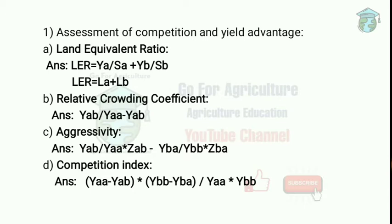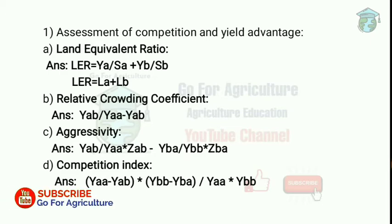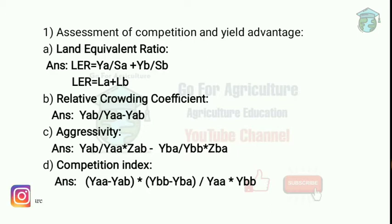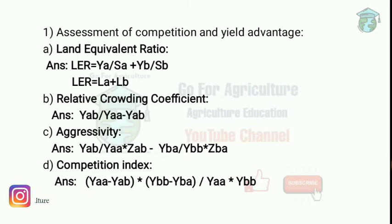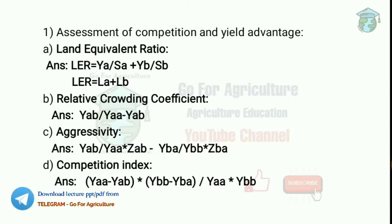Aggressivity measures how much the relative yield increase of component A is greater than component B. Next is the Competition Index, which is used to find out the yield of various crops.